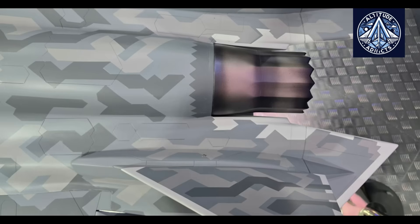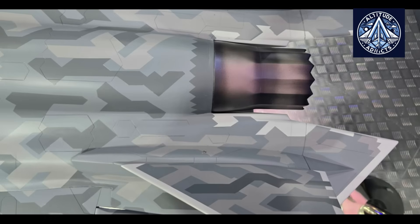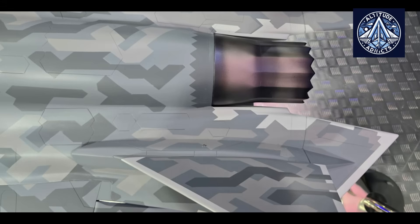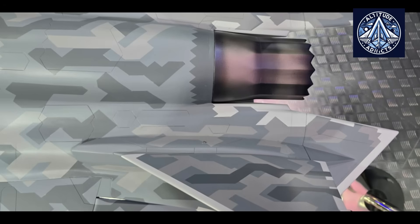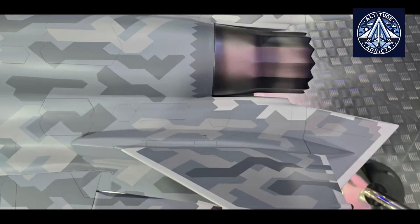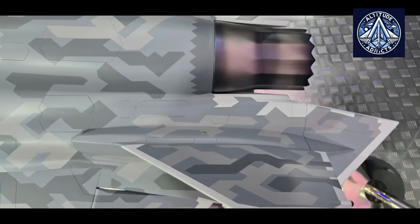In its unmanned configuration, the aircraft eliminates the cockpit, oxygen systems, displays, ejection seat, and emergency hardware. This reduction in equipment lowers weight and frees internal space, enabling larger fuel reserves or additional avionics.